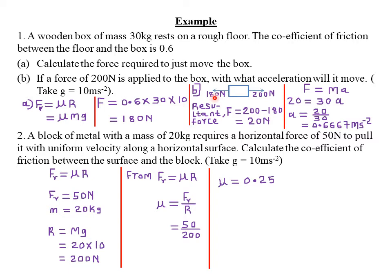Force is a vector quantity. If frictional force acts to the left or in the opposite direction, we denote it as negative. To find the resultant force, we take the summation of the pulling force and the frictional force. Because frictional force acts in the opposite direction it is negative, so: F = 200 + (−180) = 20 newton as the resultant force acting on the body.